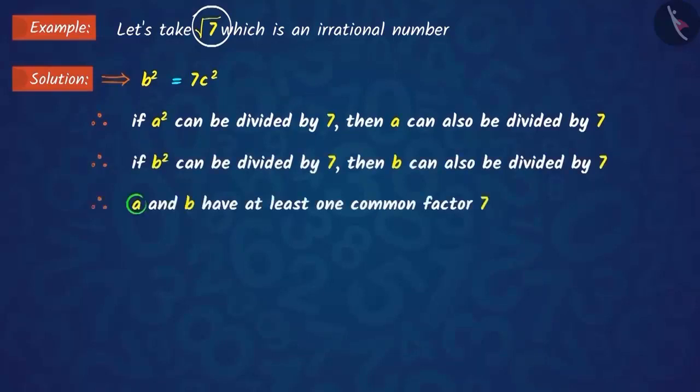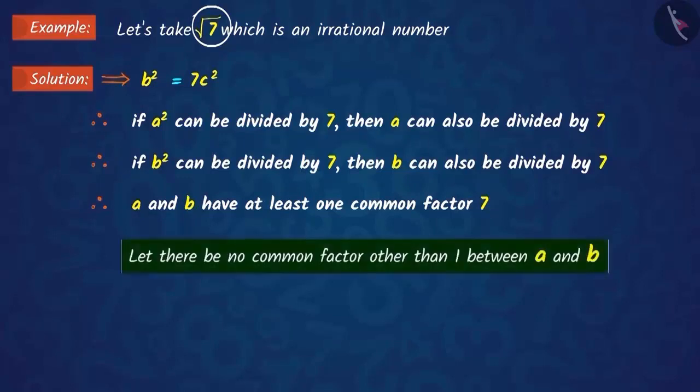Thus, we know that a and b have at least one common factor and that the common factor is 7. Note that we had assumed that a and b do not have any common factors other than 1, whereas the opposite or contradiction of this is obtained.